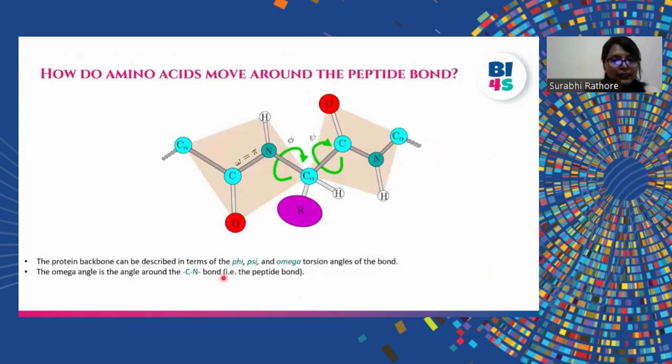This primary structure further folds into the secondary structure. But before understanding this, it is important to know how amino acids move around the peptide bond. This movement can be understood by understanding the movement of phi and psi angles. As you can see here, the phi angle is around the nitrogen and the carbon alpha bond, while the psi angle is around the bond between carbon alpha and the carbon of the next amino acid.